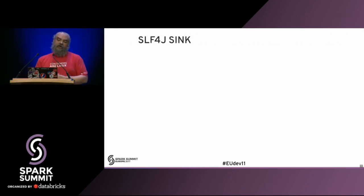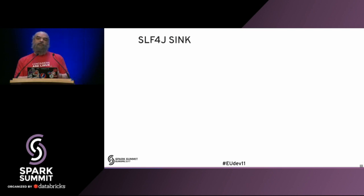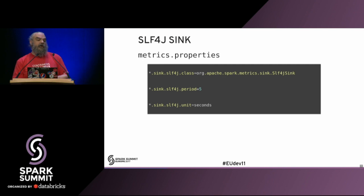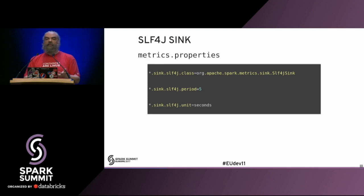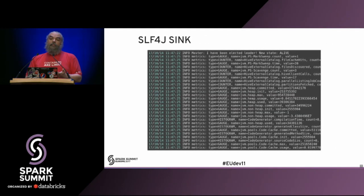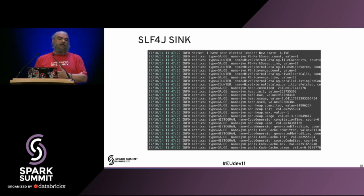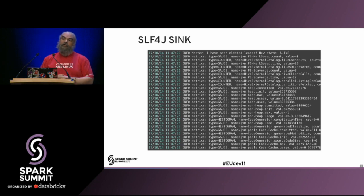The next sink is the simple logging for JSON sink. This is really nice if you have a deep logging story in your processes already - if you're already hooking into logging mechanisms and collecting those logs into a store, this might be a good sink to use. Turning it on is very simple; the lines are already in metrics.properties, you just uncomment them and change the period to however frequently you'd like to harvest those metrics. You get this output in standard out. Like the console sink, it's not hugely useful by itself, although it's more structured and could be parsed in a machine-readable way if you're not using extended logging mechanisms.